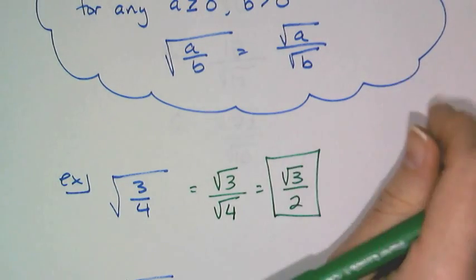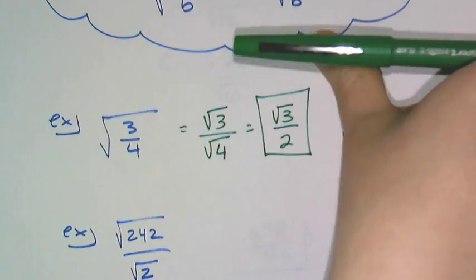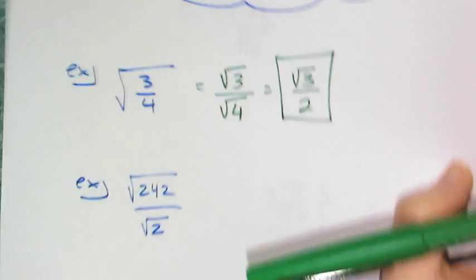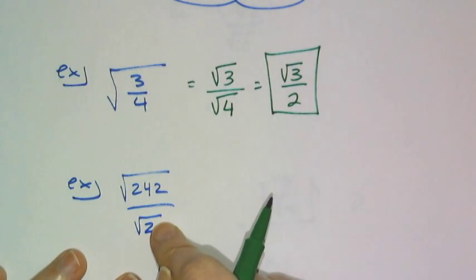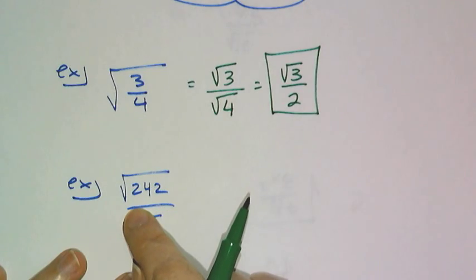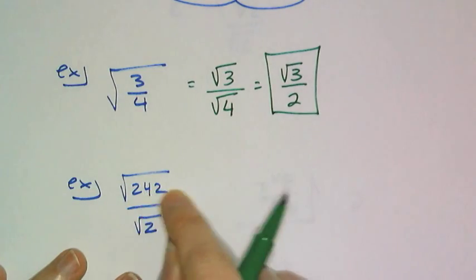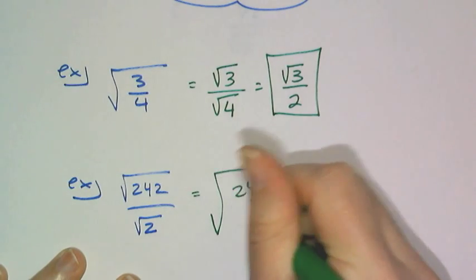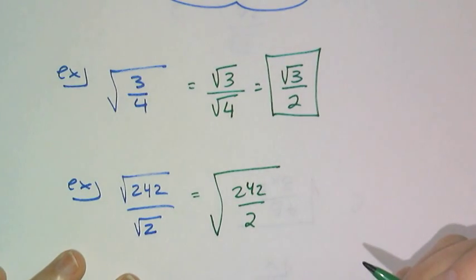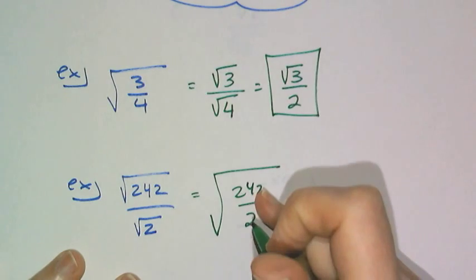Now this rule, like the product rule, works both directions, so in this case you can simplify this multiple ways. You can go ahead and try to simplify the square root of 242, or you can squish the fraction back together using the division property and then simplify this.